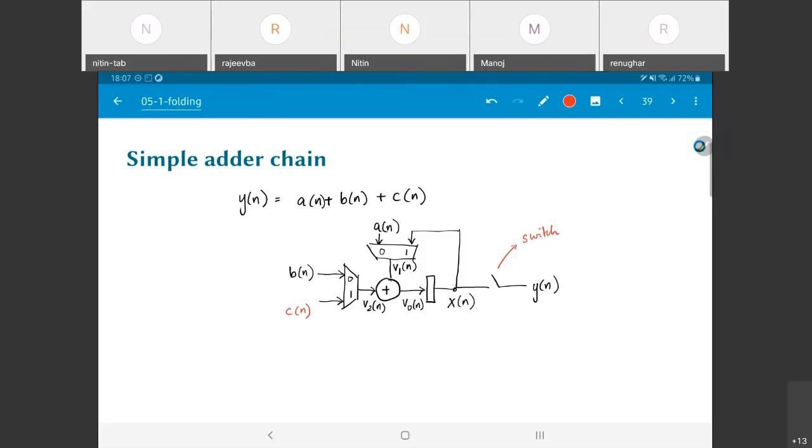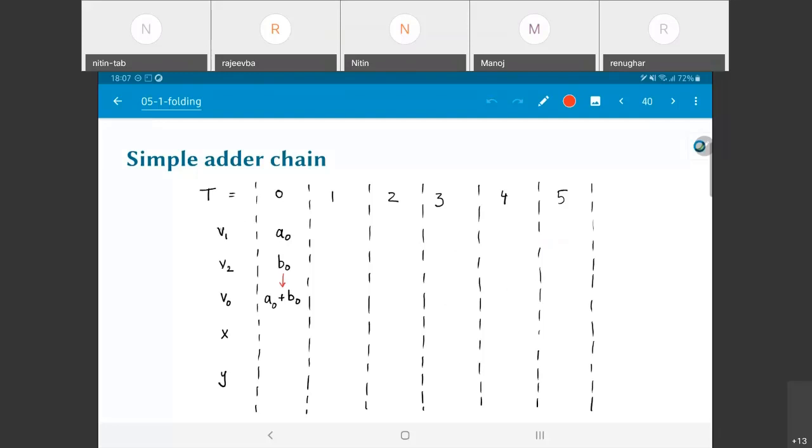So whenever the select signal is 0, A and B are fed into the adder. Whenever it is 1, the register output and C are fed into the adder. Now, I have just labeled the outputs of the multiplexers V1 and V2, the output of the adder as V0, and the output of the register itself is X of n. And finally, I have also labeled where Y of n is supposed to come. This is some kind of a switch which will be turned on and off at some regular intervals. Now, why do I have all of this? Because I want to sort of go through the process and, you know, in time step through this and understand how this circuit behaves in practice.